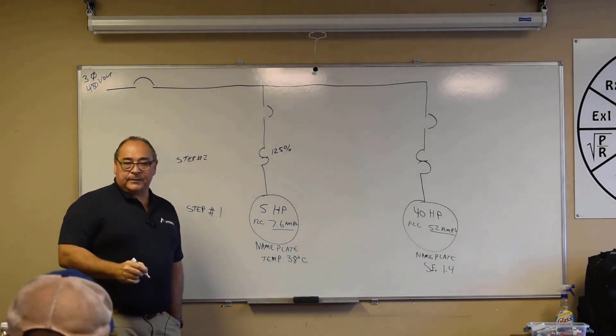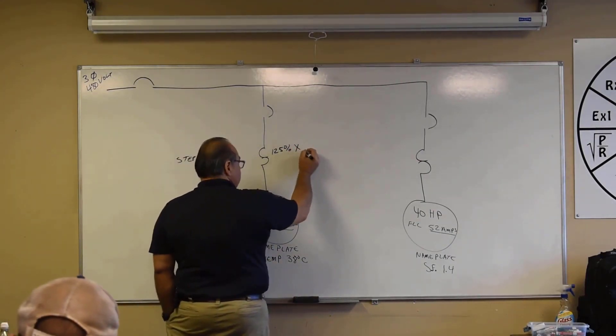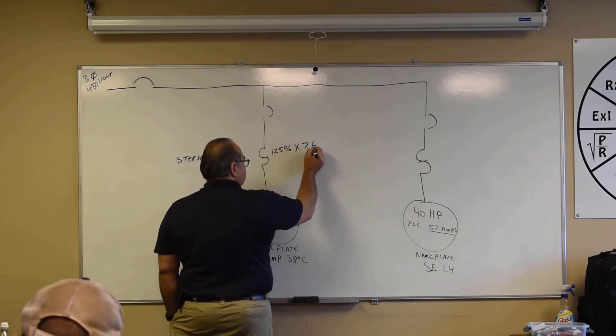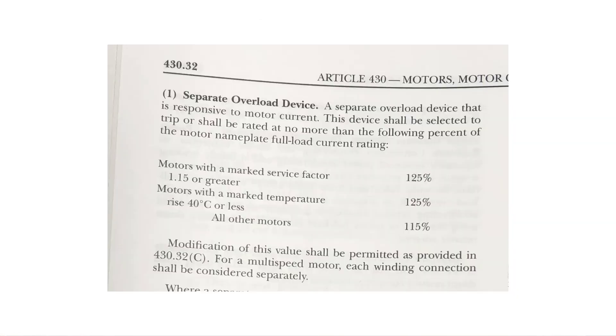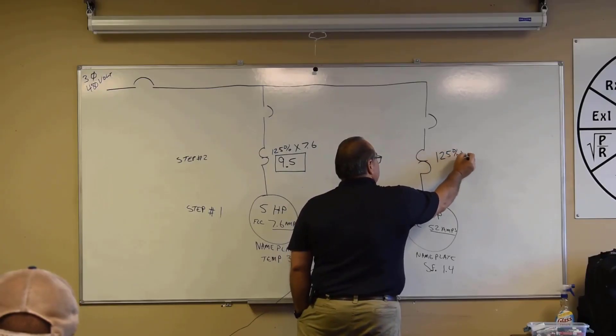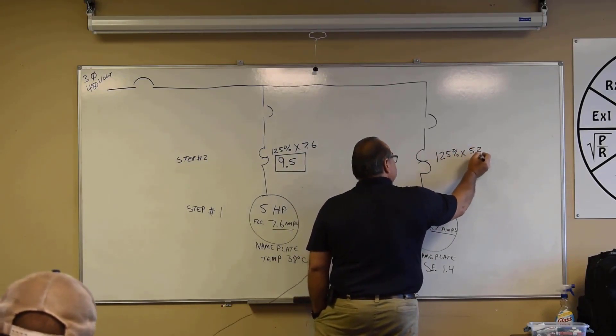Now over on the 40 horsepower motor, we got nameplate information, we got service factor 1.4. What's our percentage we're going to use over here? 1.15 or greater, and we're at 1.4. So 125 percent times what? Our full load current is 52 amps, right? What's that equal? 65 amps.